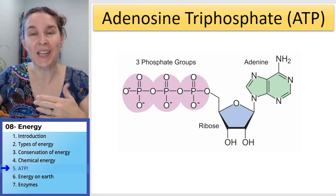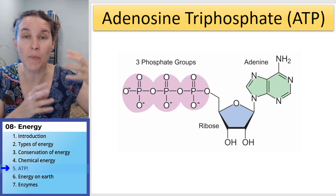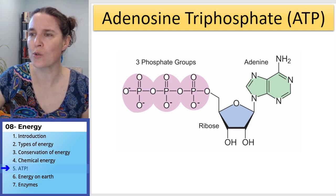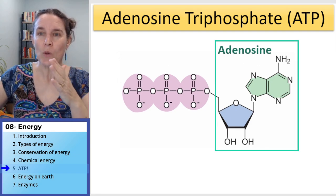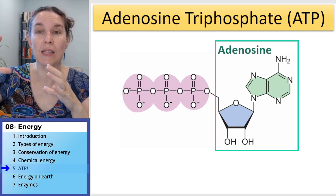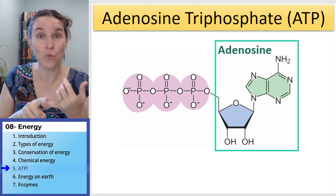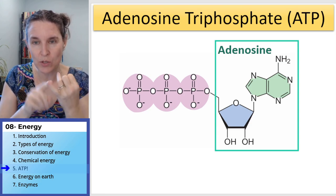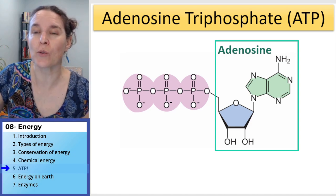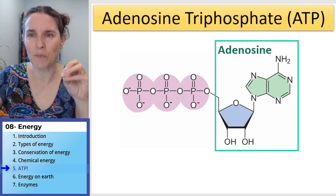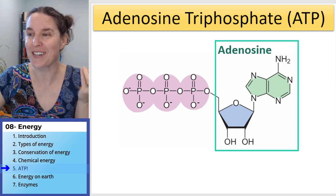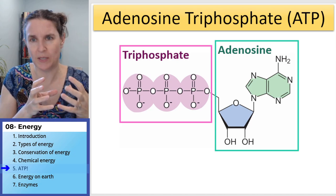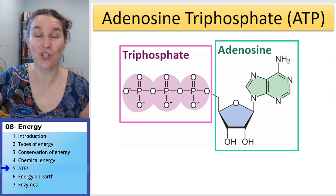ATP, adenosine triphosphate, is a nucleotide — in the category of biomolecules of nucleic acids — and it consists of three parts. Breaking down the name: we have an adenosine piece. A nucleotide consists of a sugar, which in this case is ribose, and a nitrogen base, in this case adenine. Adenine plus ribose sugar makes the part of this molecule we call adenosine. And then in pink, if the other part of the name is triphosphate, we have three phosphate ion groups connected to each other and then connected to the adenosine.